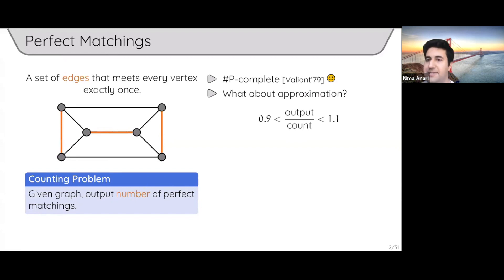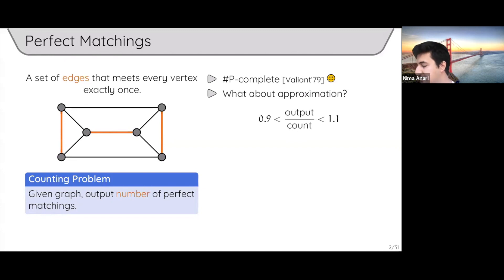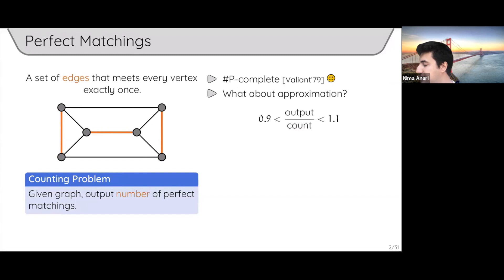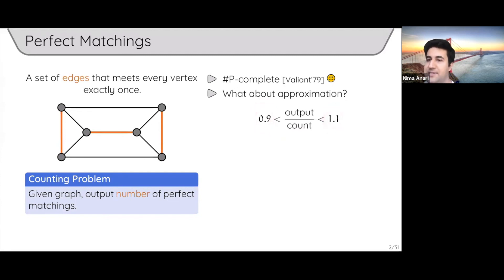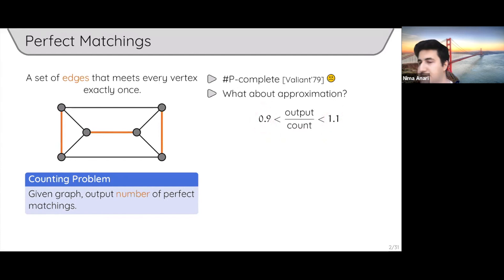Since this problem is #P-complete, we probably have no hope of getting an exact counting algorithm. The next question is: what about approximations? We want an algorithm that outputs a number that approximates the true count up to some constant factor — say 0.9 to 1.1. Any constants you get here can automatically be boosted to any other arbitrary constant you want, so it really doesn't matter.